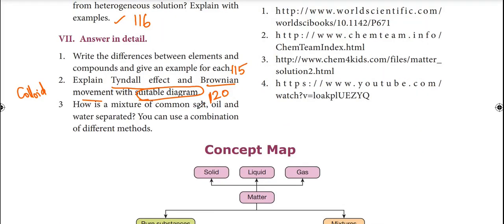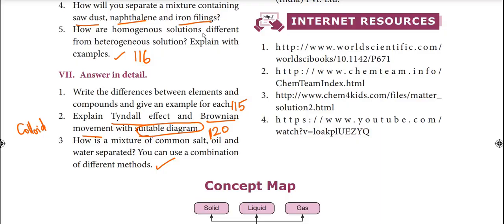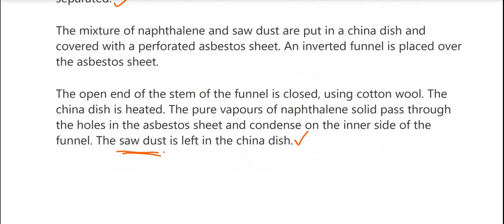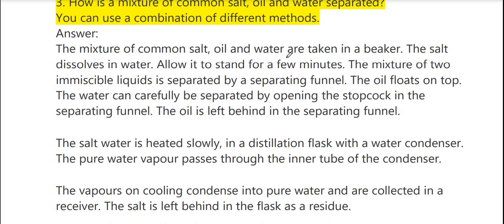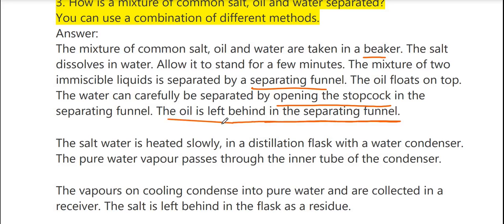Next question: how is a mixture of common salt, oil, and water separated using a combination of methods? The mixture is taken in a beaker. The salt dissolves in water. Allow it to stand — the oil floats on top. The two immiscible liquids are separated using a separating funnel by carefully opening the stopcock. The oil is left behind in the separating funnel.